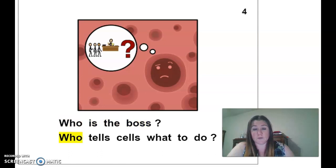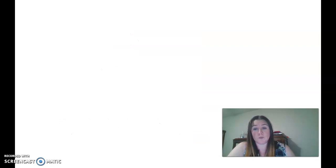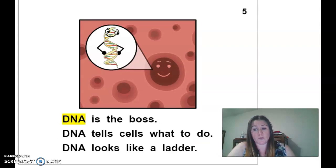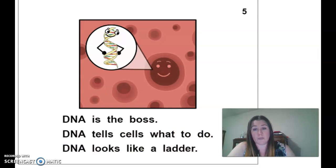Who is the boss? Who tells cells what to do? DNA is the boss. DNA tells cells what to do. DNA looks like a ladder. So DNA is in every cell and it is how the cells know what to do in your body.